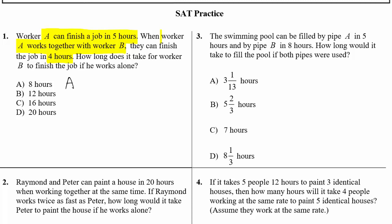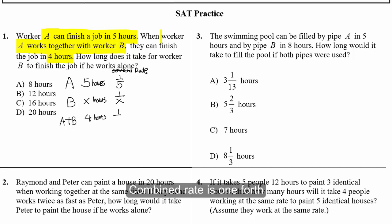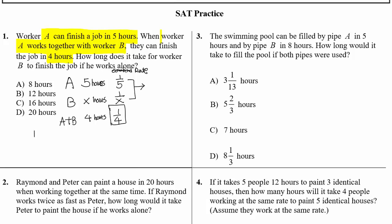Worker A takes five hours, so the rate is one-fifth — every hour he can finish one-fifth of the job. Worker B takes X hours alone, so his rate is one over X. If they work together it takes four hours, so the combined rate is one-fourth. We combine their rates: one-fifth plus one over X equals one-fourth.